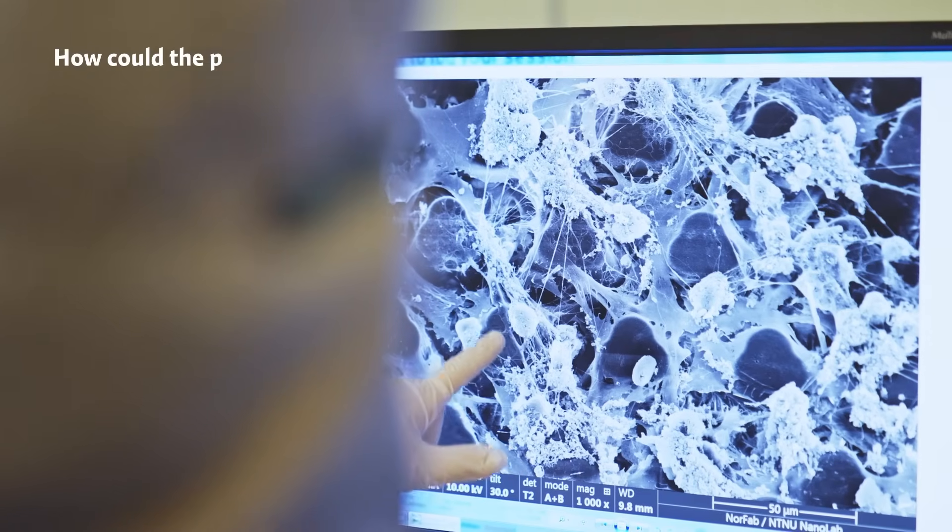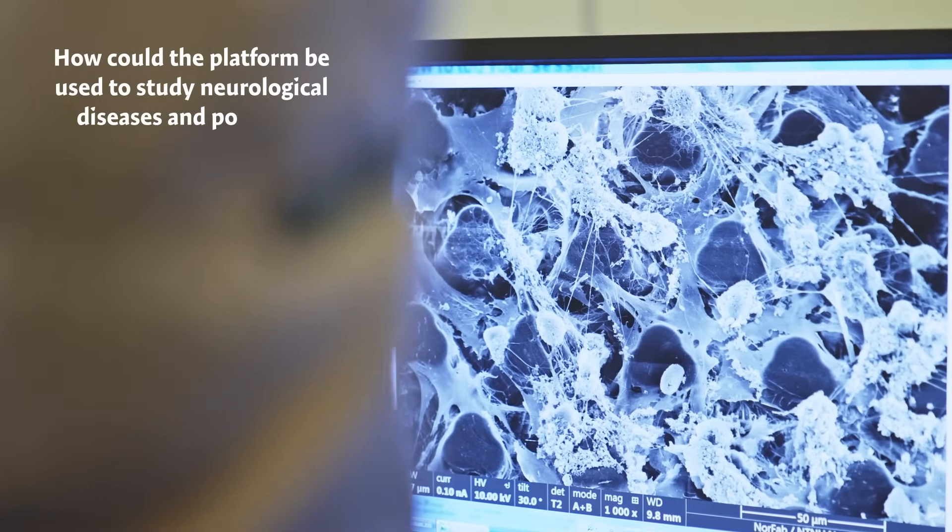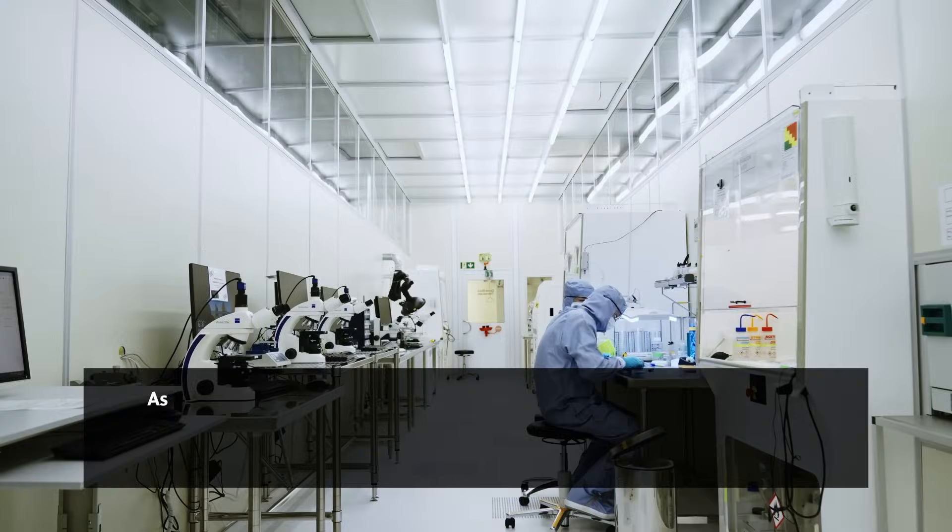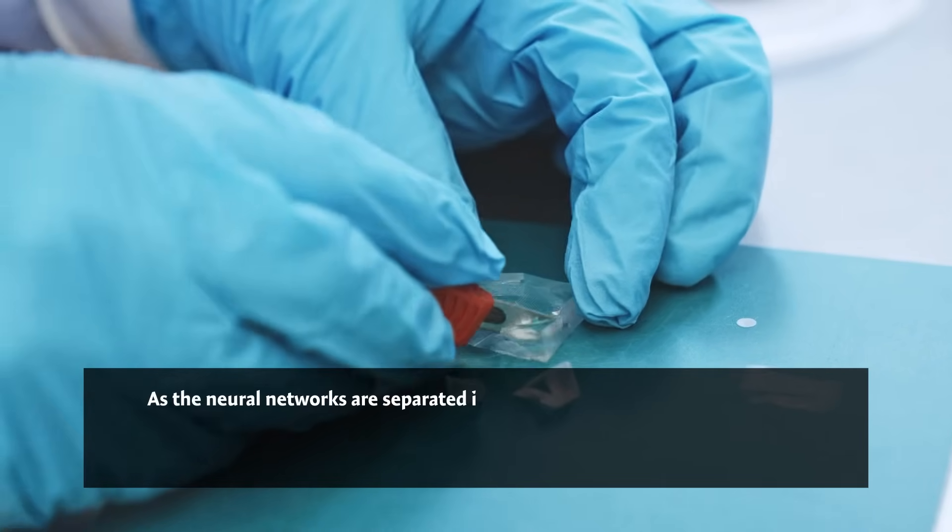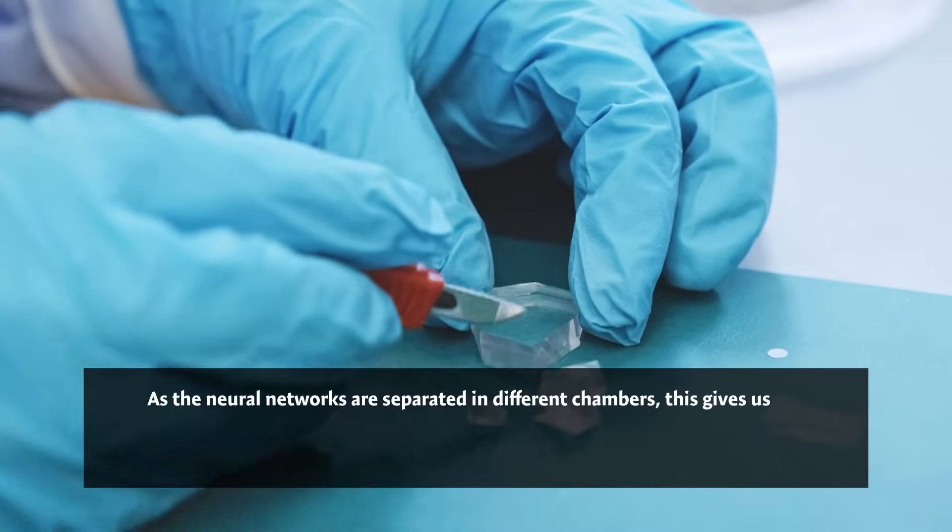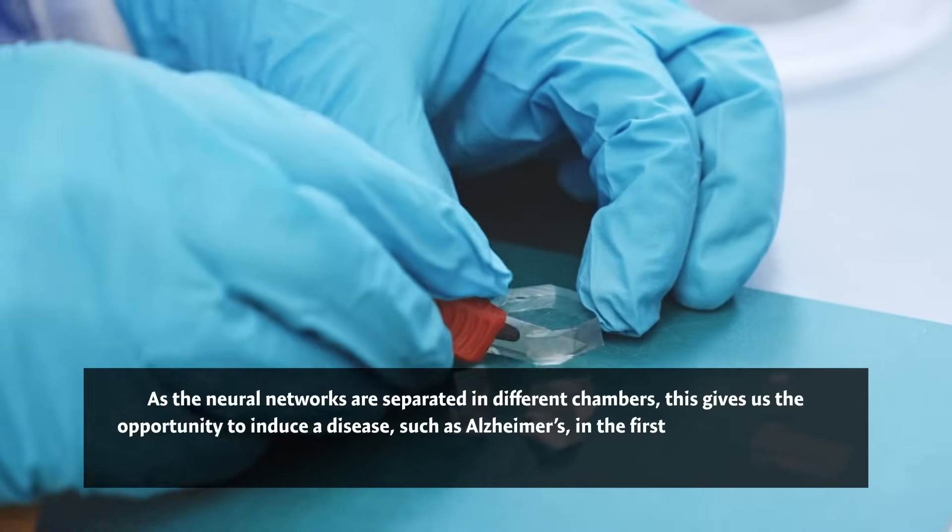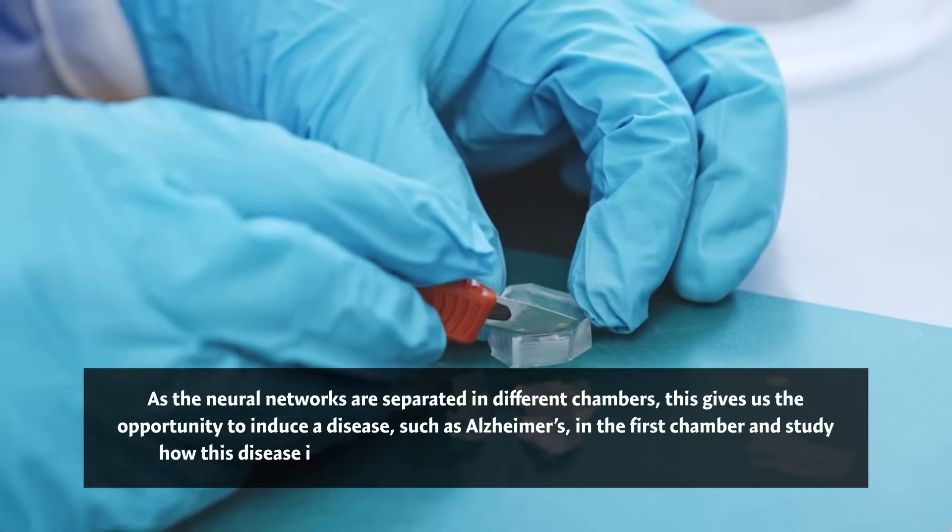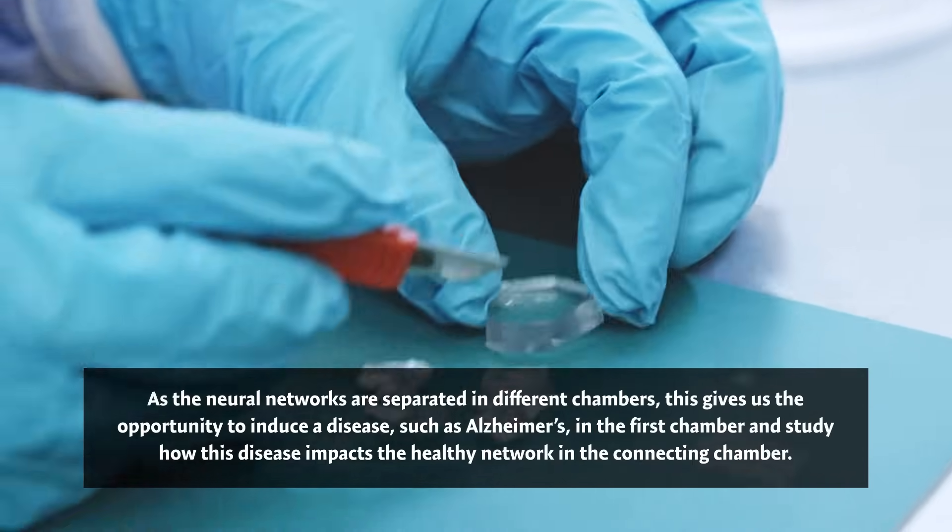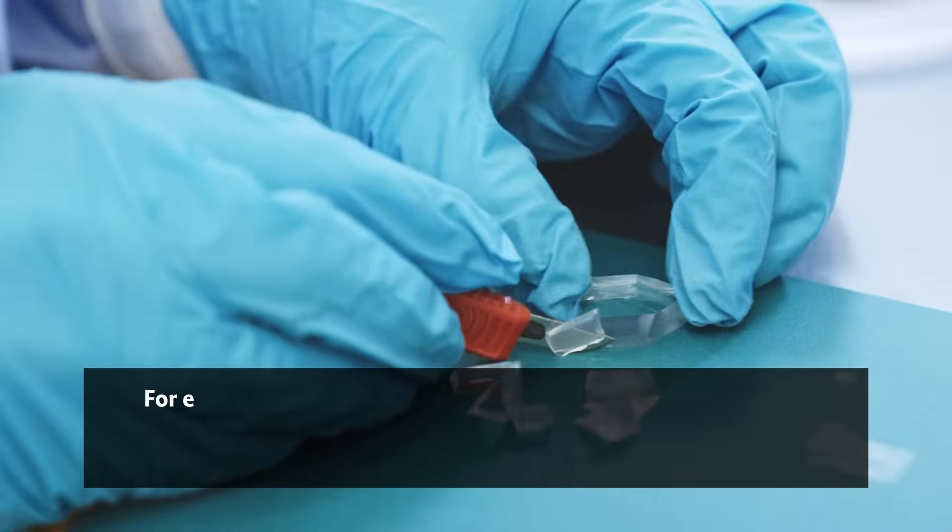How could the platform be used to study neurological diseases and potential treatments? As the neural networks are separated into different chambers, this gives us the opportunity to induce a disease such as Alzheimer's in the first chamber and study how the disease impacts the healthy networks in the connecting chambers.